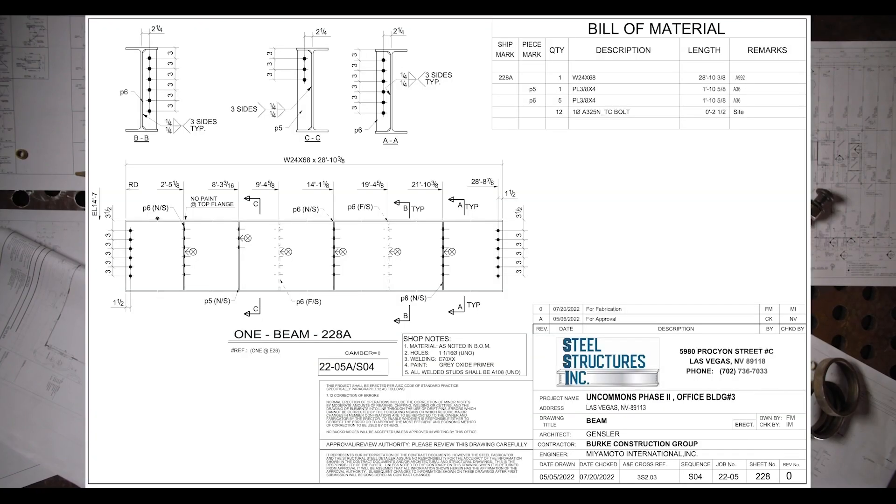Just like our columns, our beams need to be lifted and connected in their correct orientation. And this is why it is important to know how to read your drawings and be able to assimilate which direction the beam should be facing. For example, let's look at this beam 228A here. This beam had connection plates running up and down the flanges of the web of the beam. Does it really matter which side is facing what direction? Yes, it definitely does.